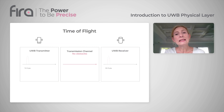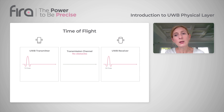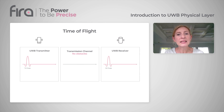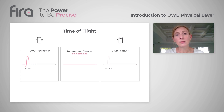UWB's distance measurement is based on time of flight, and this mechanism requires the receiver to precisely measure the signal's reception time. The UWB's ultra-short time domain pulse has much faster rising and falling edges than standard narrowband signals, and therefore it enables finer timing resolution at the receiver.